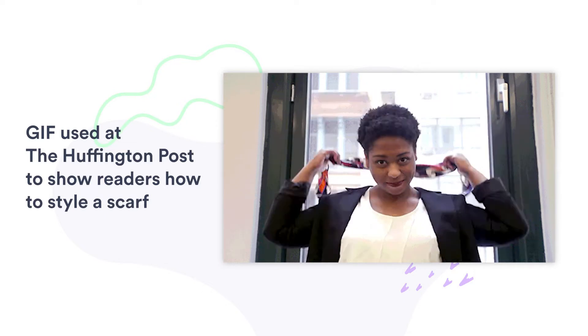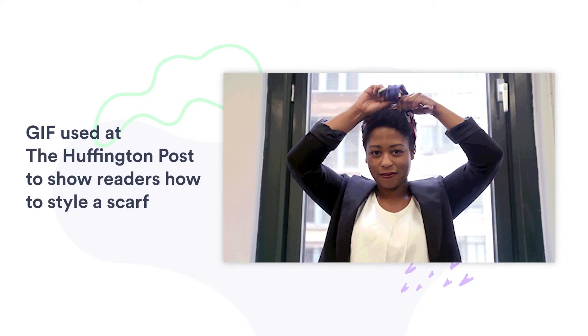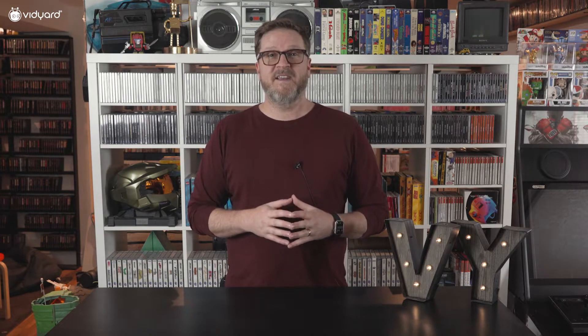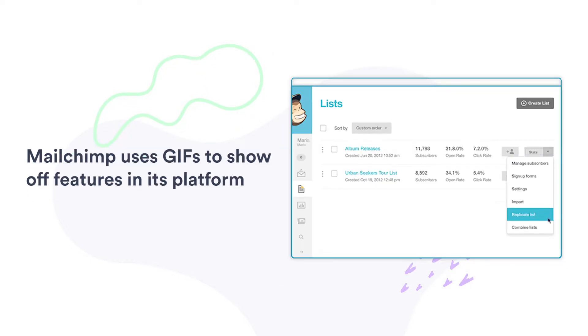Here's one great example of a GIF at work. Fashion editors at the Huffington Post used a GIF to show readers how to style a scarf — that's hundreds of words saved by using one moving image. Charlotte Tilbury uses them to demo eyeshadow shades, and MailChimp uses GIFs to show off features in its platform. 93% of marketers who use videos say it's a key part of their strategy, so why not use bite-sized videos everywhere with GIFs? It's a quick and effective way to create shareable memes and compelling digital stories for social media promotion.